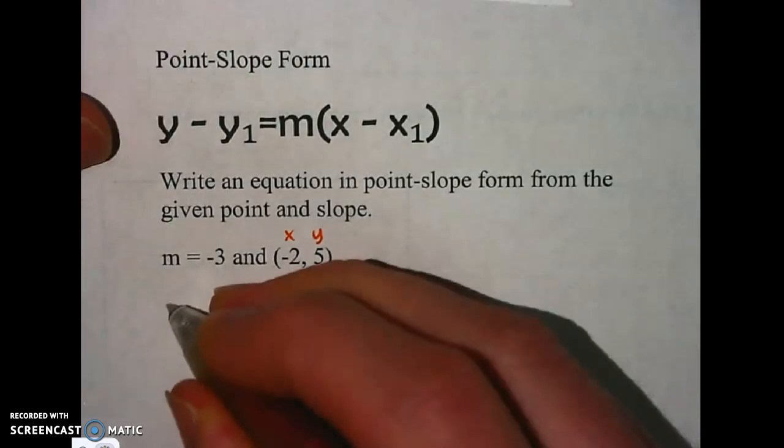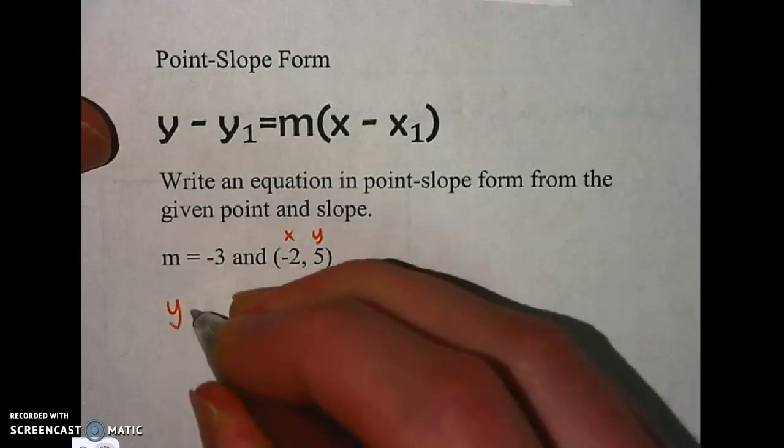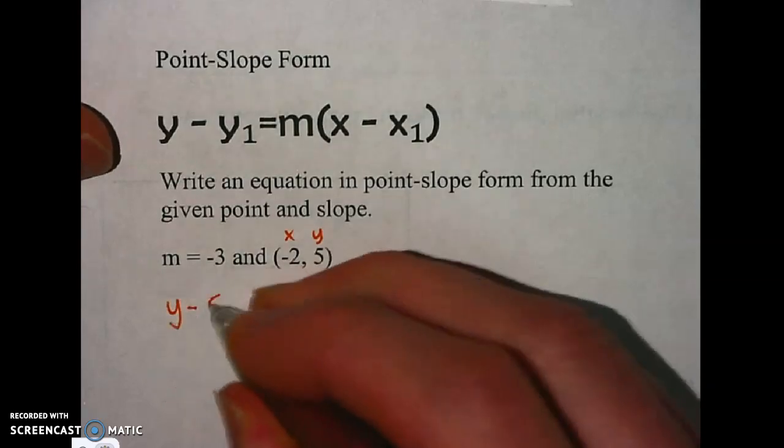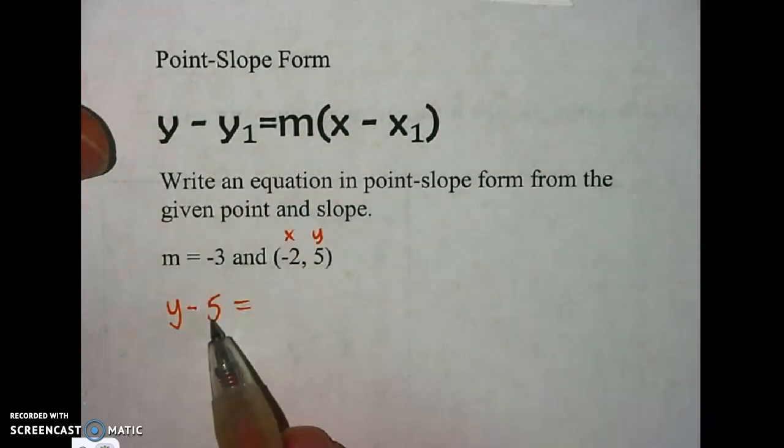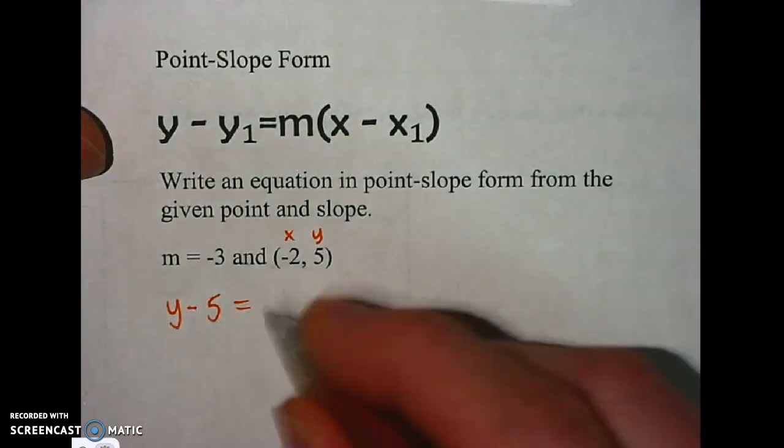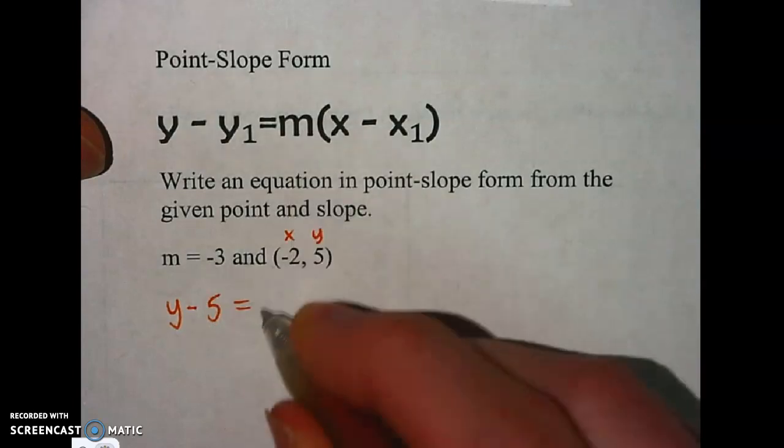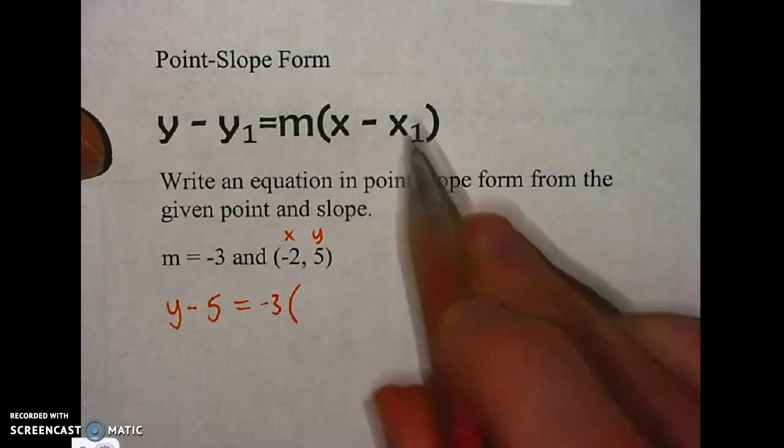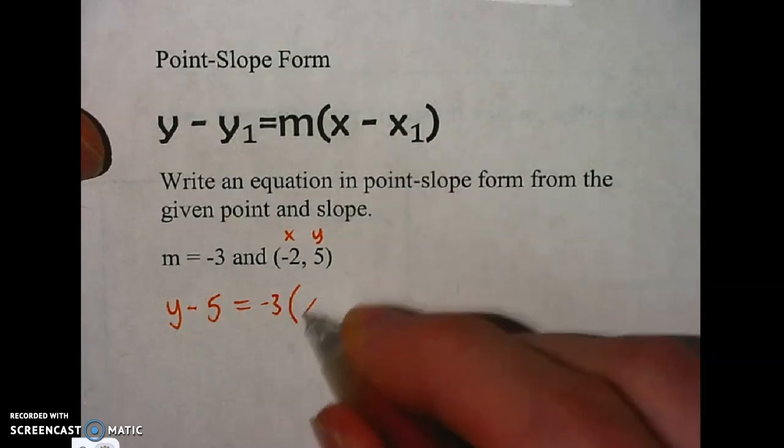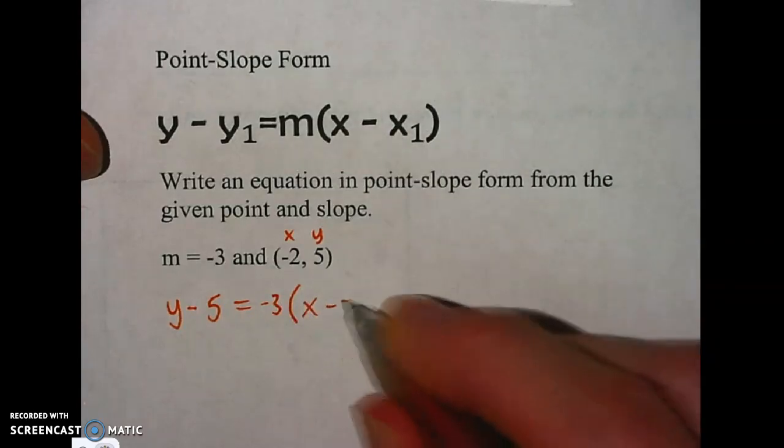So that would be y minus, and my y value is 5. That was y minus y. Y minus the y value I have equals m. I know m is negative 3. Parentheses, x minus the x value we have. So x minus minus 2.